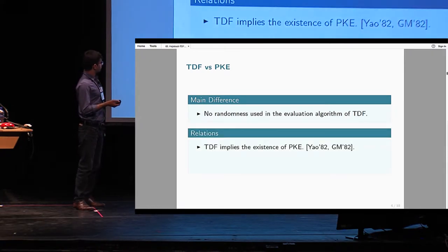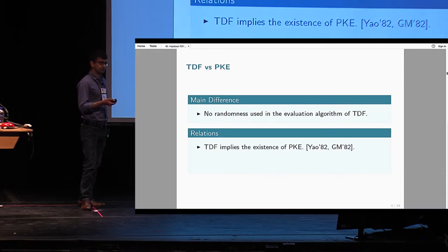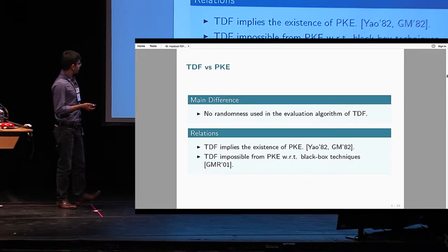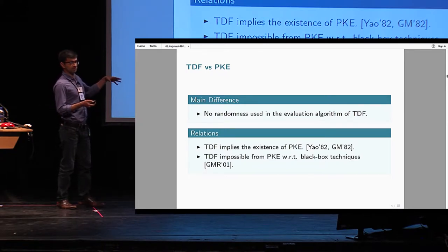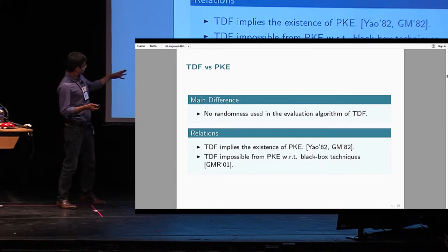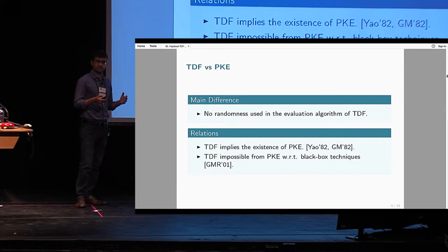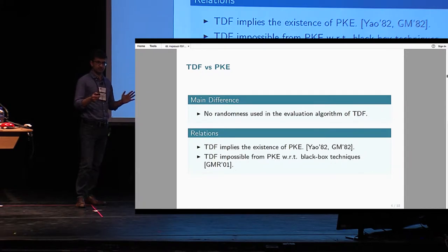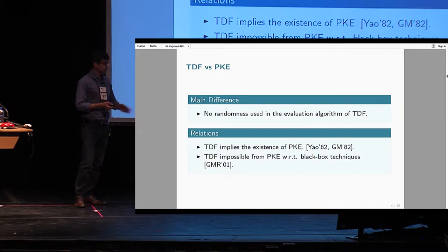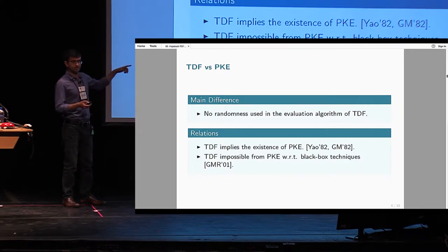In terms of the relationship between these two notions, we know the classical result that trapdoor functions imply public encryption. For the other direction, we know it is impossible with respect to black box reductions. In particular, this impossibility result says that techniques that generically give us public encryption may not be sufficient for trapdoor functions when working with black box reductions, which are most of the techniques in crypto.